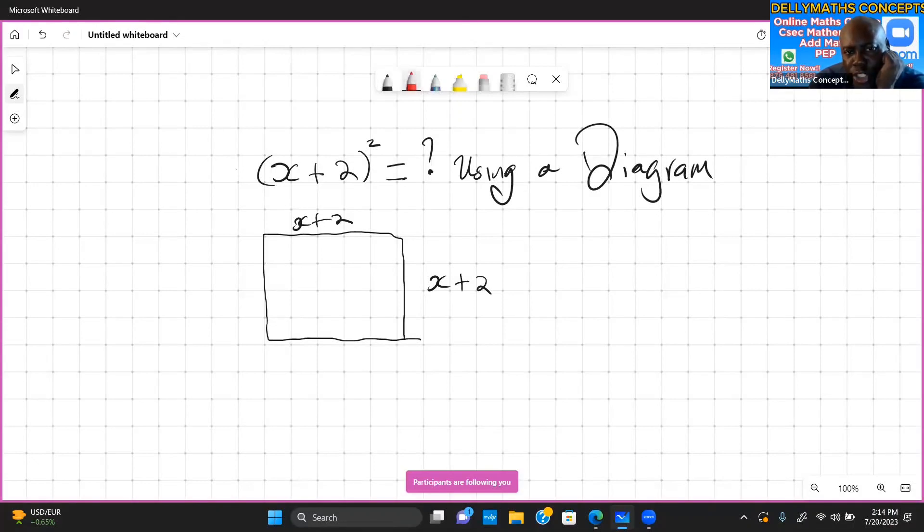Let me divide this up into x. So x, and this is 2. Basically, the entire thing from here to here is x + 2. X, and this is 2 as well, right? And now, on the other side, I'm going to cut this just the same. So I'm looking at this being x and this being 2.